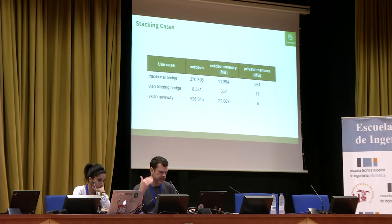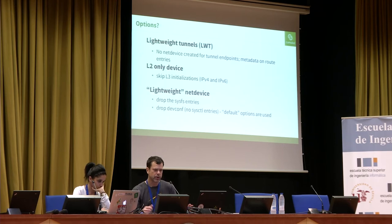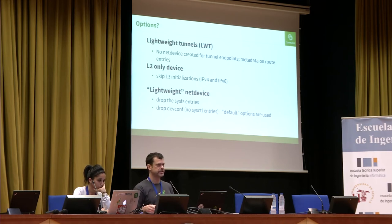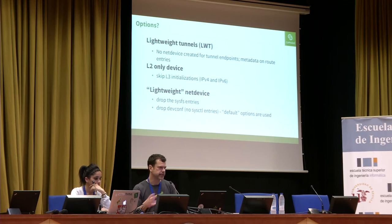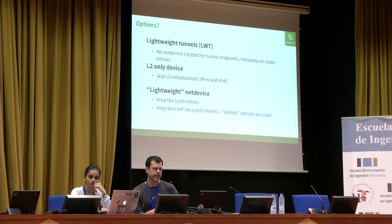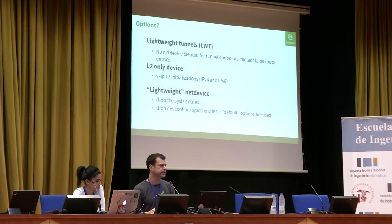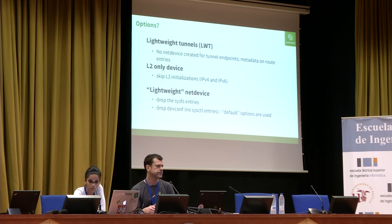What are some options to start reducing this memory consumption? One thing already done is lightweight tunnel devices — rather than creating a net device per tunnel, you just put metadata on a route to tell packets where they're going next. That reduces memory overhead for certain cases. Someone also sent out a patch for an L2-only device that essentially skips some of the L3 initializations, which is a start, but the /sys entries are also bringing in significant memory consumption.